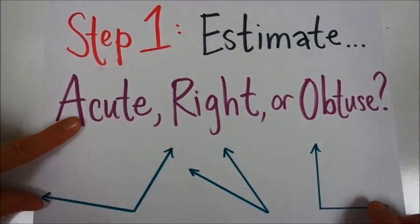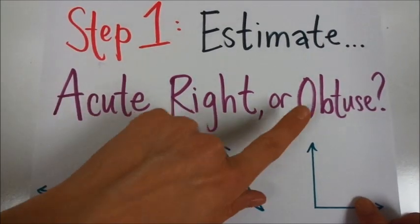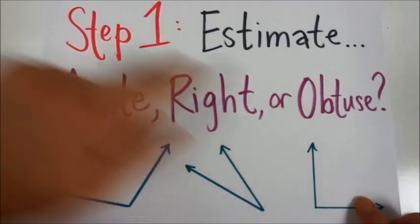We've learned that acute angles are angles that are less than 90 degrees, right angles are angles that are 90, and obtuse angles are bigger than 90 degrees.